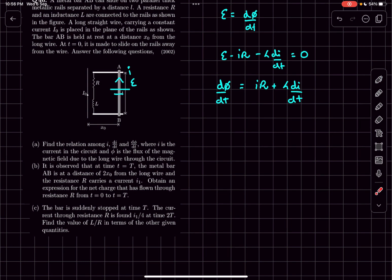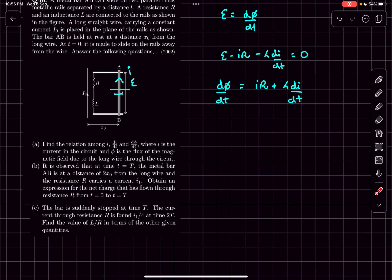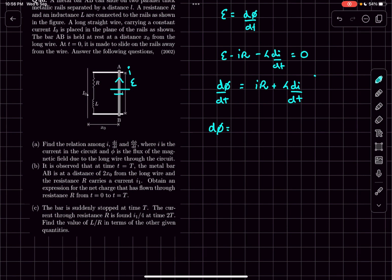In part (b), at time t = T the metal bar AB is at a distance of 2x₀ from the long wire and the resistance R carries a current of i₁. We have to obtain an expression for the net charge that has flown through resistance R from 0 to T. Since we need the charge, I'm going to rearrange the equation by taking dt to the other side, giving: dΦ = R·i·dt + L·di.